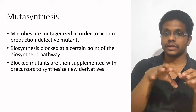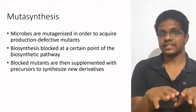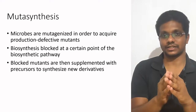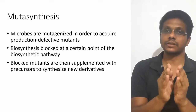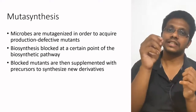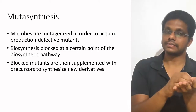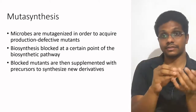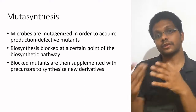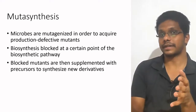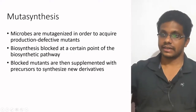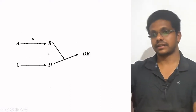So in mutasynthesis, the first stage is to take the mutant and produce a mutation, making the biosynthetic pathway defective. And to this defective biosynthetic pathway microorganism, we will add a precursor which is different from the original product. This microorganism then incorporates our precursor into the product to get a better product. I will explain it in more detail.